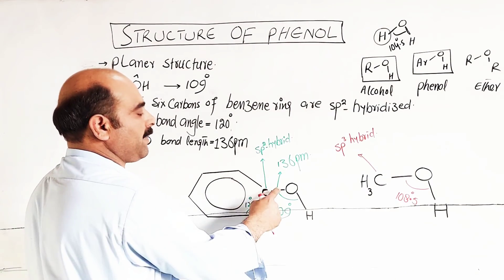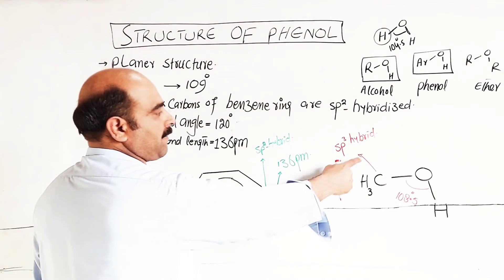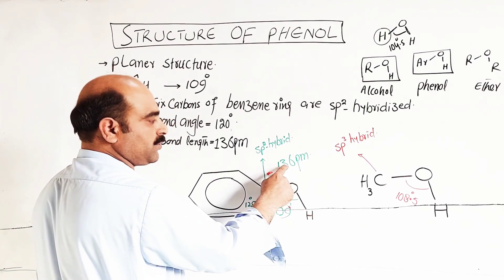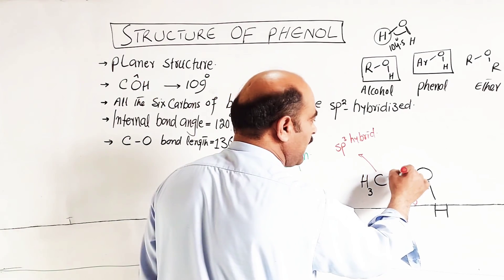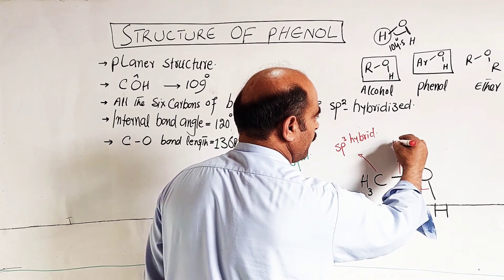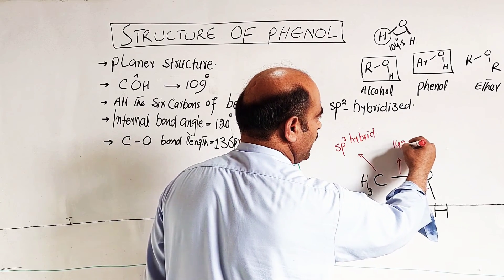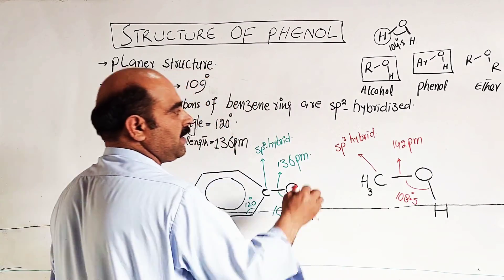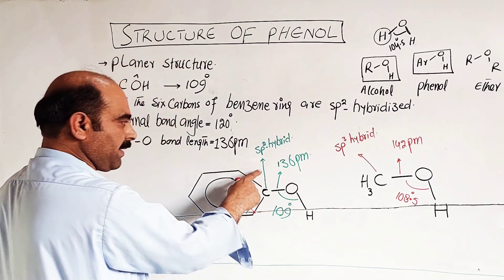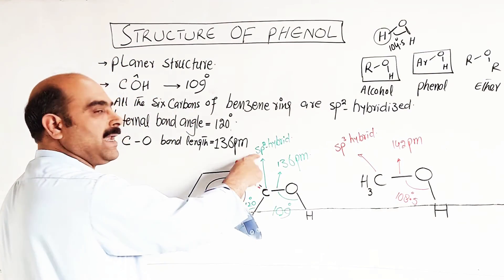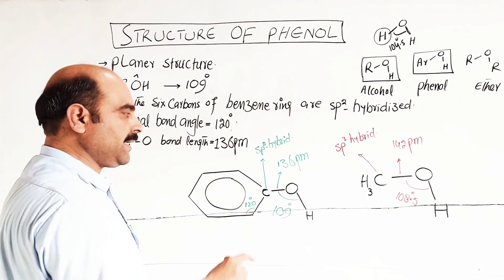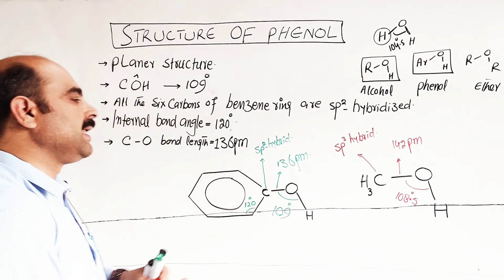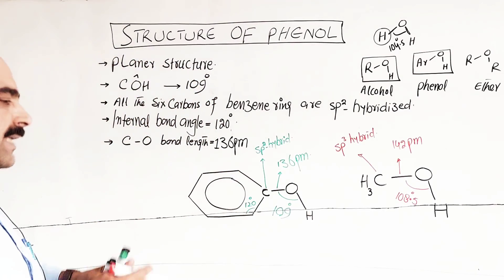When the carbon is SP2 hybridized, the carbon-oxygen bond length is 136 picometers — in some references given as 134 picometers. This bond length is shorter compared to SP3 hybridized carbon, where the bond length is longer.